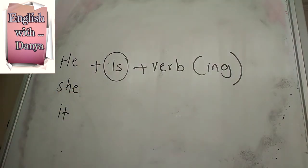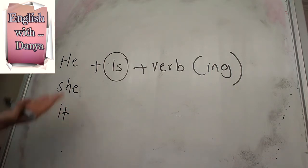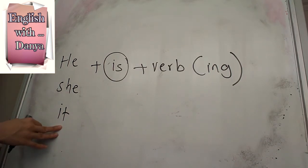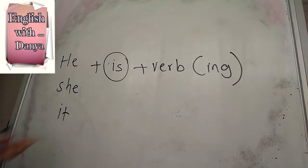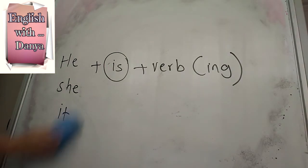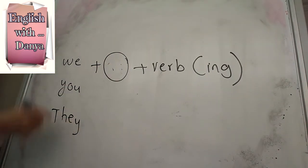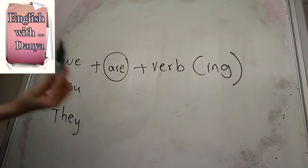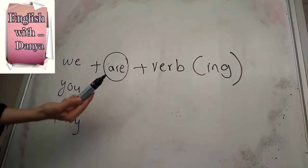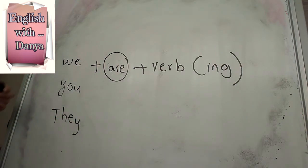With 'he,' 'she,' or 'it,' we add 's' to 'be' — so we use 'is.' For example: 'He is studying,' 'She is working,' or 'It is sleeping.' Let's say we're talking about an animal — the puppy is sleeping, or 'It is sleeping.' With a plural subject like 'we,' 'you,' or 'they,' we add 'r' — so we use 'are.' For example: 'We are studying,' 'You are working,' or 'They are working.'